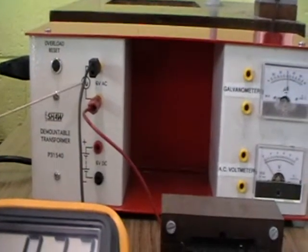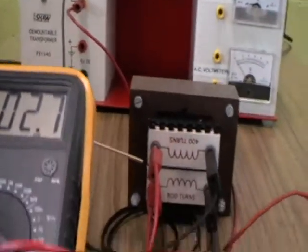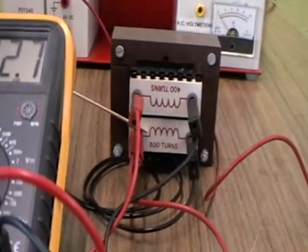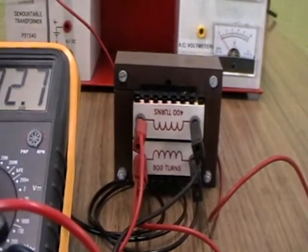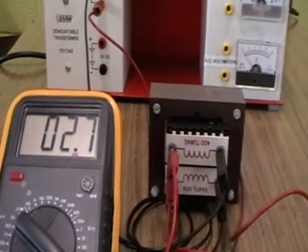If VP equals 6 volts AC, NP equals 800 turns, and NS equals 400 turns, then in theory VS equals 3 volts.